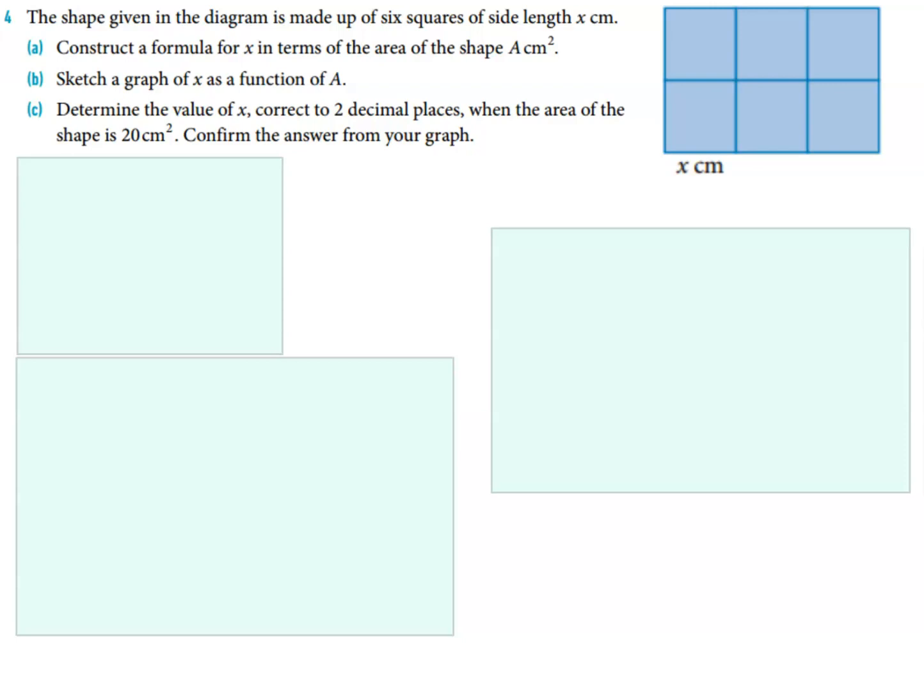Construct a formula for x in terms of the area of the shape A in square centimeters, and then sketch a graph of x as a function of A. Determine the value of x correct to two decimal places when the area of the shape is 20 square centimeters, and confirm the answer from your graph. Okay, so stop the video please and have a go.